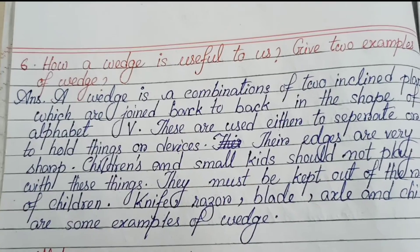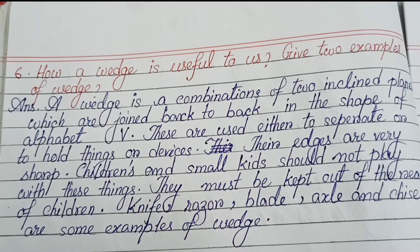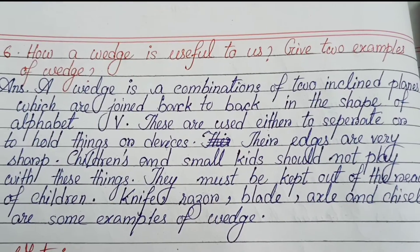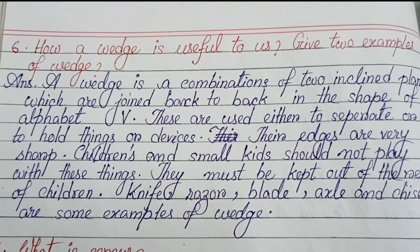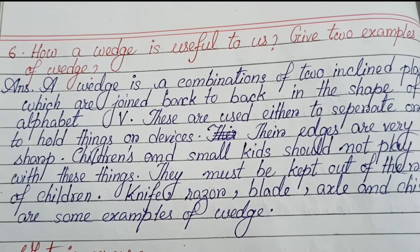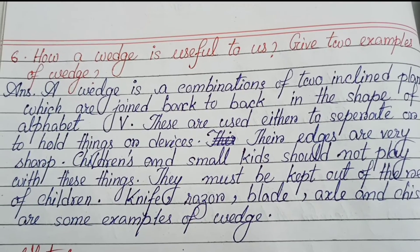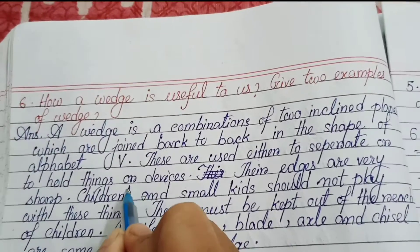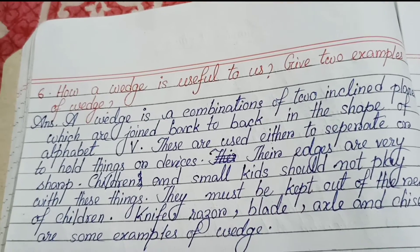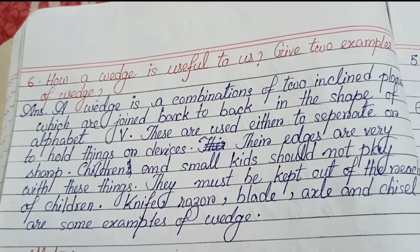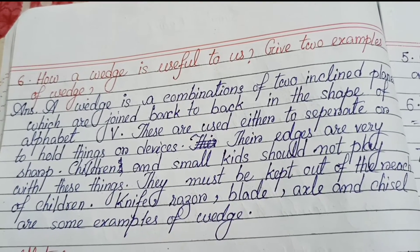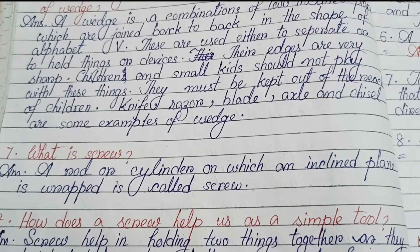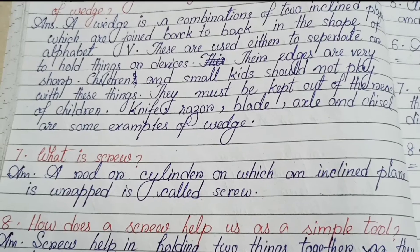Question six: How is a wedge useful to us? Give two examples of wedge. A wedge is a combination of two inclined planes joined back to back in the shape of the alphabet V. These are used either to separate or to hold things. Their edges are very sharp — children and small kids should not play with these things; they must be kept out of reach. Knife, razor blade, axe and chisel are some examples of wedge.